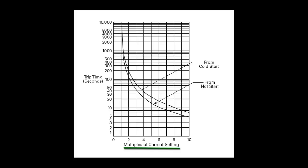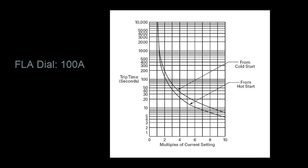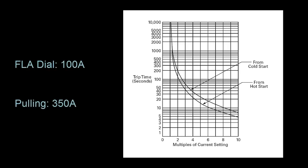We'll get to the trip class in a second. So if we have a motor that has an FLA rating of 100 amps and is constantly pulling 350 amps from a cold start, it's pulling 350% of what it should be, or 3.5 times as much. So we find 3.5, go up to the cold start curve, and it'll trip in about 50 seconds.